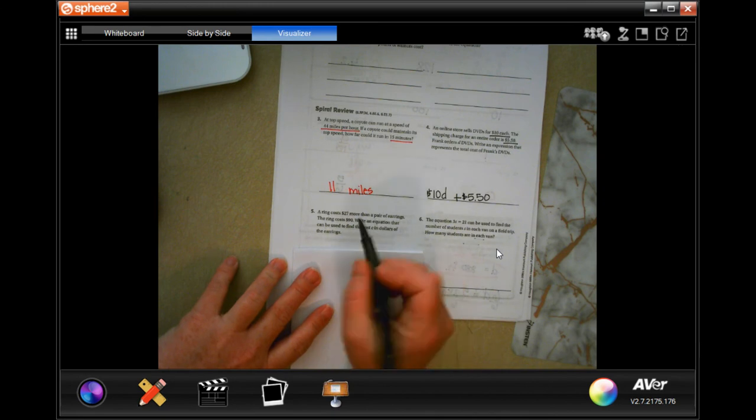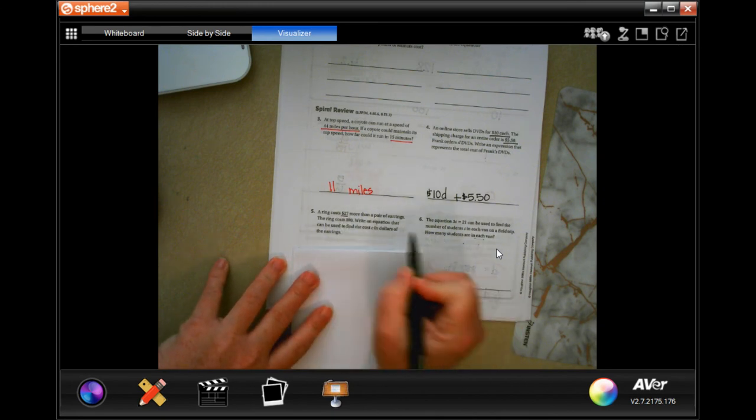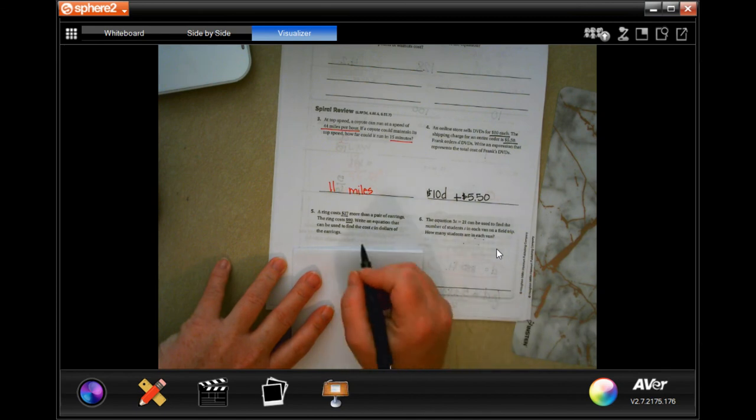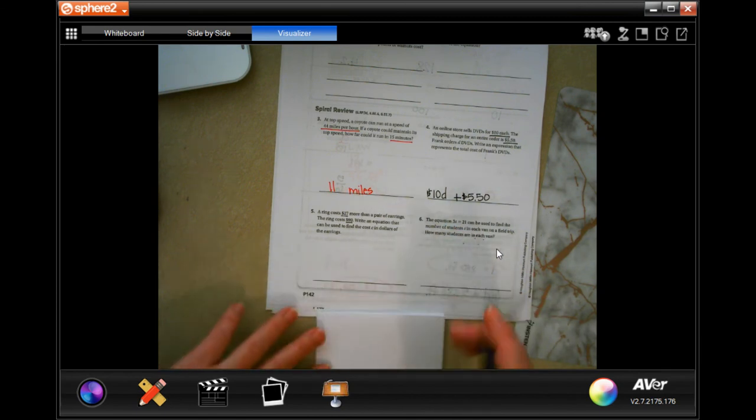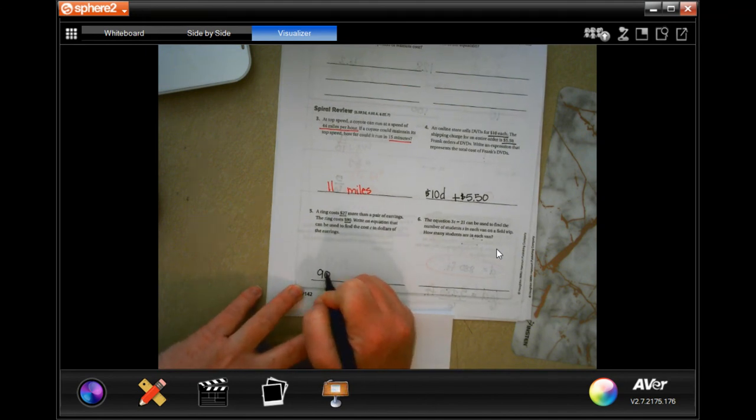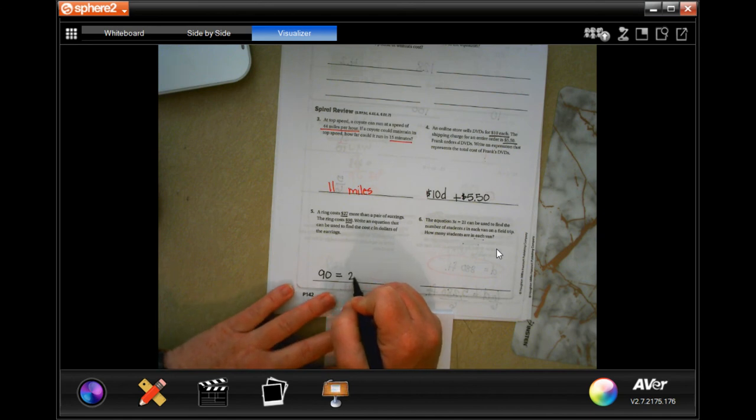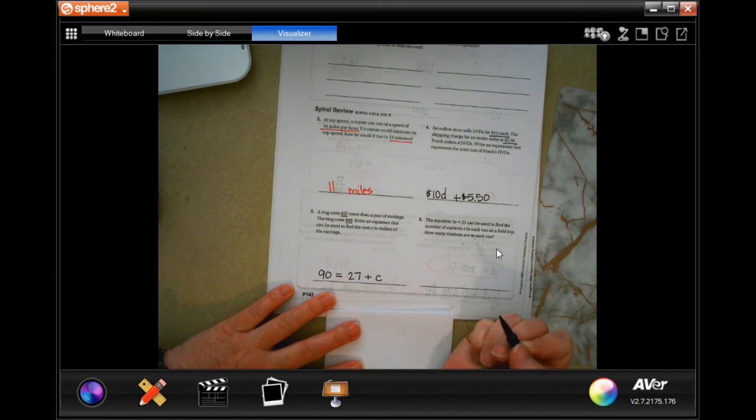A ring costs $27 more than a pair of earrings. The ring costs $90. Write an equation that can be used to find the cost, E, in dollars of the earrings. So, the ring costs $90. And that is the cost of earrings plus the $27 more than the cost of earrings. There you go.